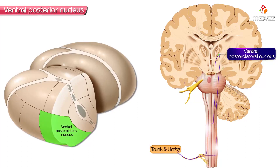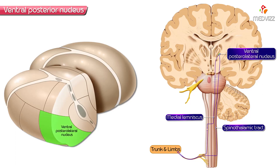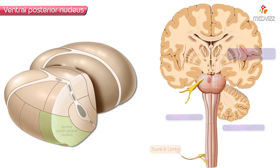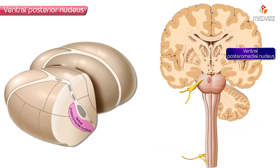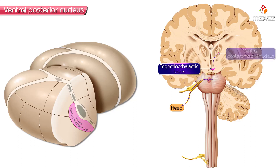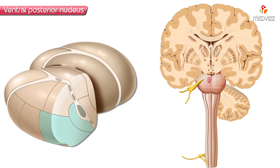An extensive lateral portion of the nucleus receives information mainly from the trunk as well as limbs via spinothalamic tracts and by means of the medial lemniscal bundle. This is referred to as the ventral posterior lateral division. A smaller medial portion of the ventral posterior nucleus receives information from the head via the trigeminothalamic tract.